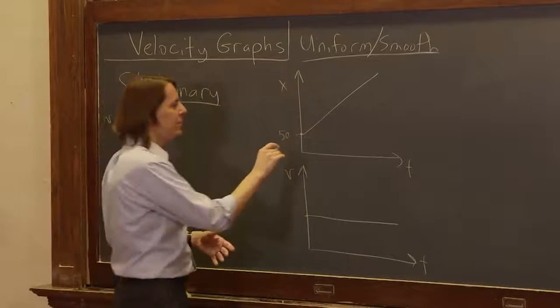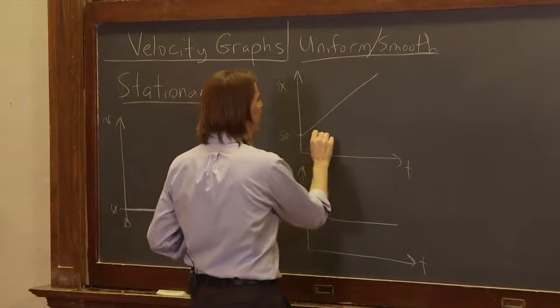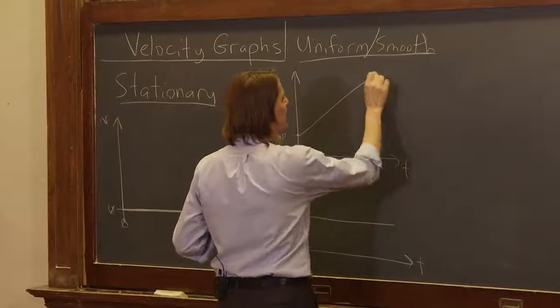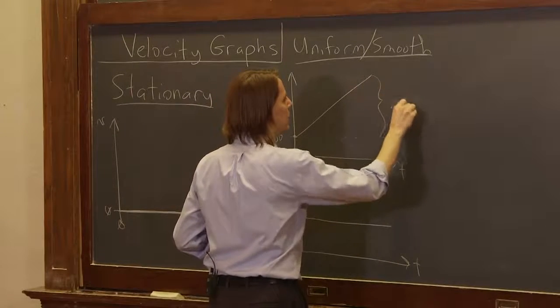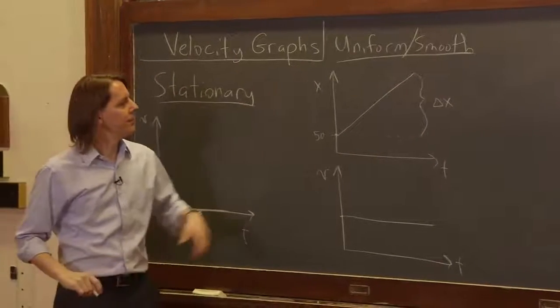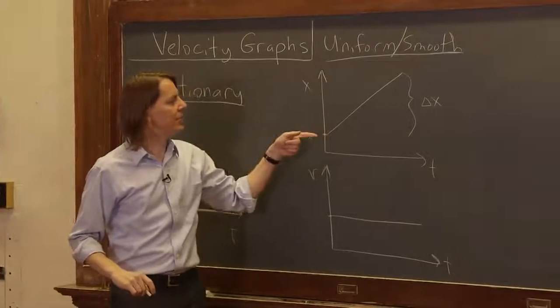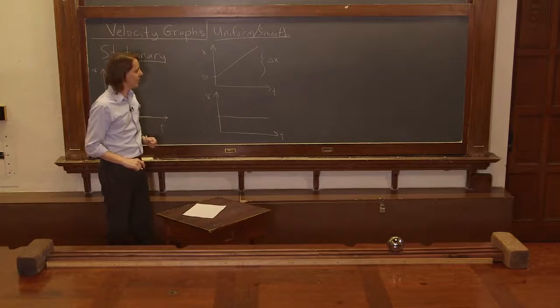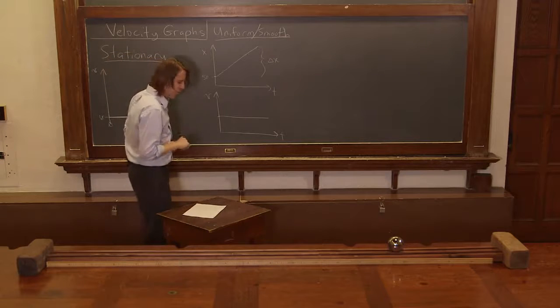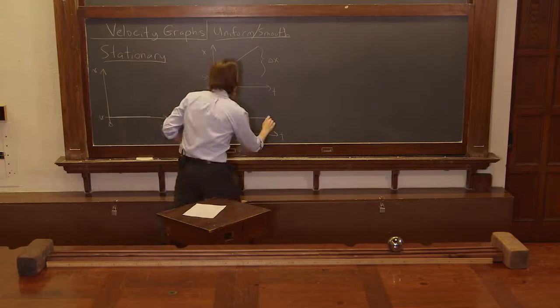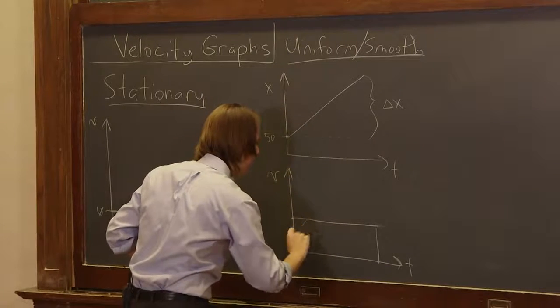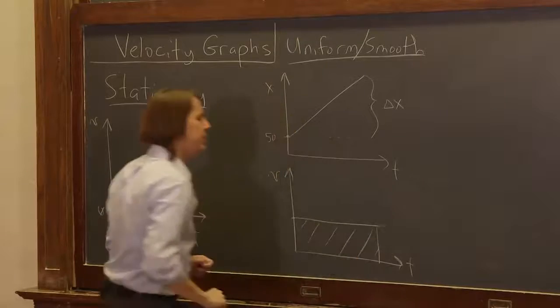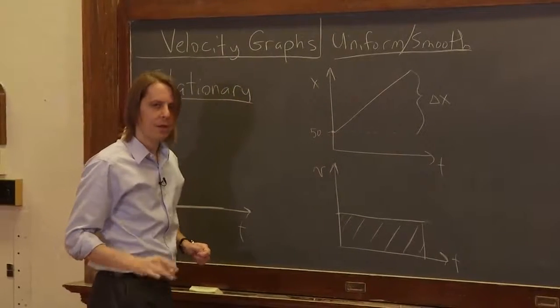You can also interpret these graphs geometrically. You can say what is delta x of this trip? Delta x is that, right? That is the position minus x naught. X minus x naught is delta x. It actually turns out that the area under this curve equals delta x.